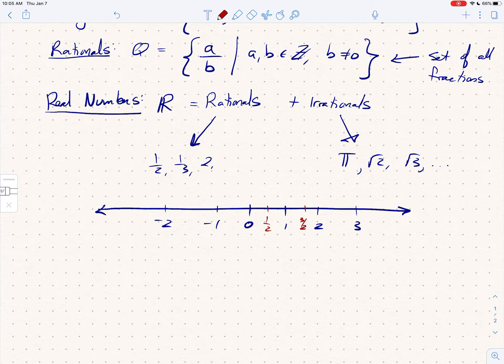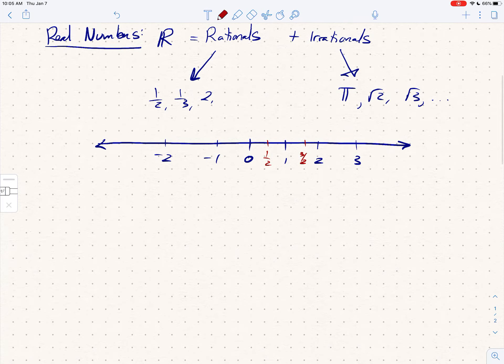But what you need to realize is, no matter how far you zoom in—maybe we want to zoom in and just look between zero and one—no matter how far you zoom in, between any two numbers, doesn't have to be zero and one, any two distinct numbers, there are actually infinitely many rationals and infinitely many irrationals.